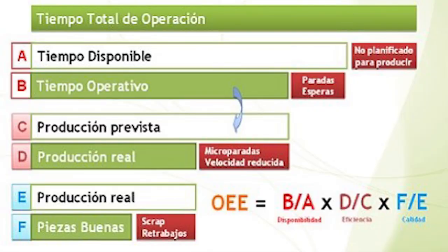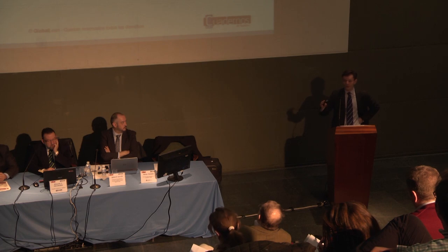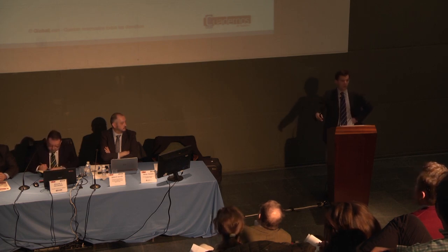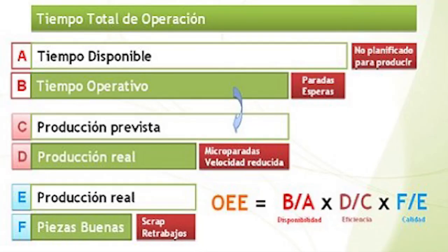El segundo indicador es el rendimiento: en las horas disponibles, si hemos producido siete horas en lugar de ocho, ¿hemos sido capaces de producir lo que podríamos en esas siete horas reales? Con todas las paradas por múltiples factores, al final el rendimiento está por debajo del rendimiento teórico. El tercer indicador es la calidad: de lo que hemos producido en esas horas, ¿cuántos productos son de calidad y no son defectuosos? Este indicador nos ayuda a conocer el ratio de disponibilidad, rendimiento y calidad.